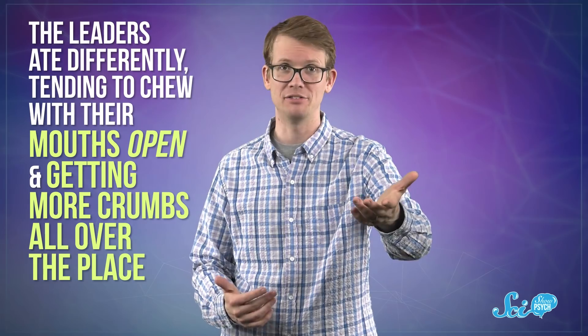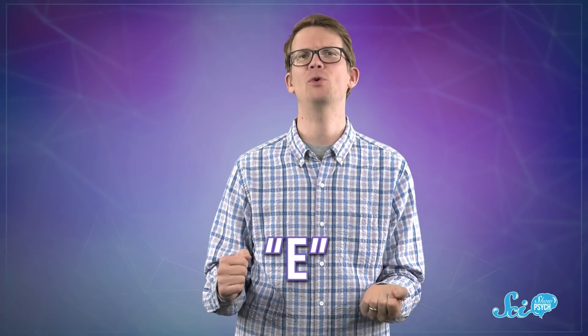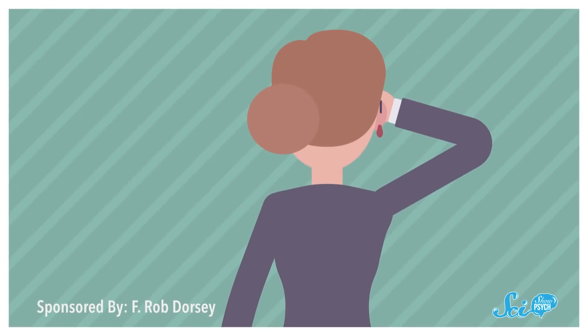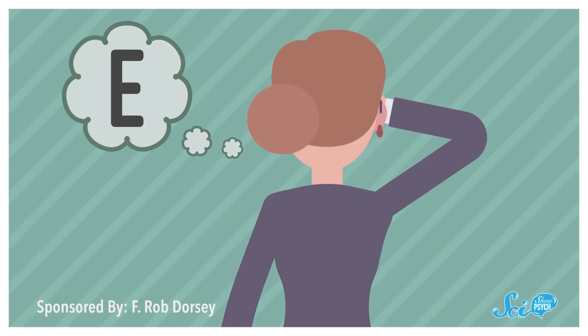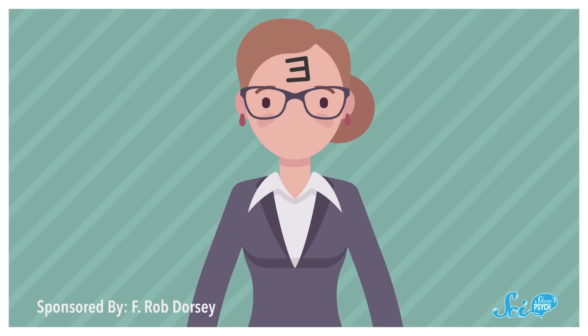Another study asked some people to write about a time when they had power over someone else, while others were told to write about a time when someone had power over them. Other studies have found that this is a way to manipulate whether someone's feeling powerful. Then they had participants draw the letter E on their forehead, something that kind of forces you to see yourself from someone else's point of view. People who were feeling powerful were three times more likely to draw the E pointing in the direction that would make sense if they were reading it, but backwards for everyone else.